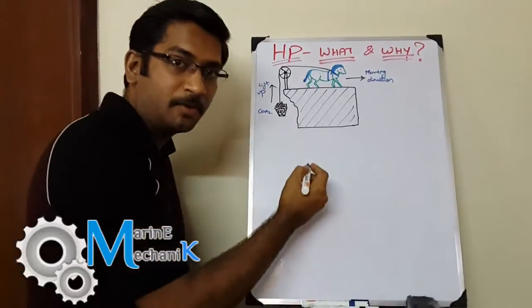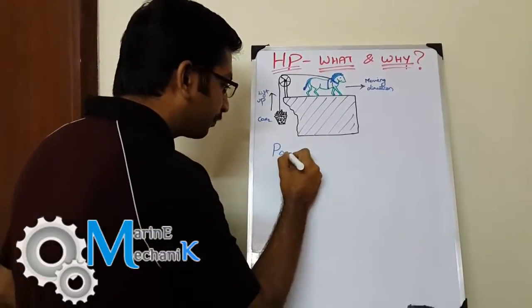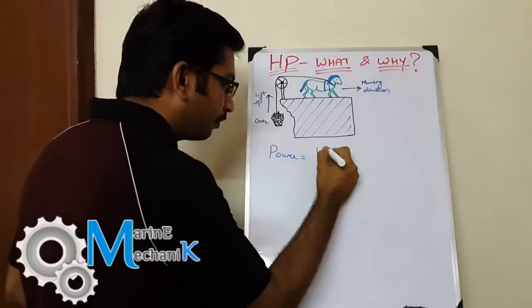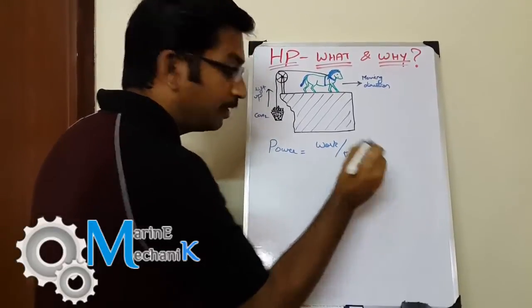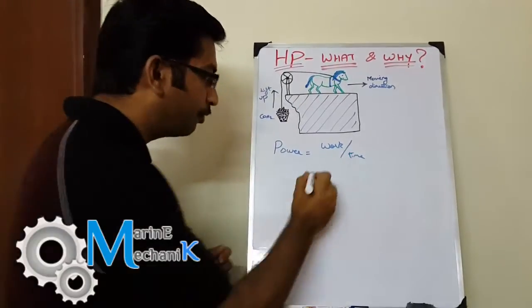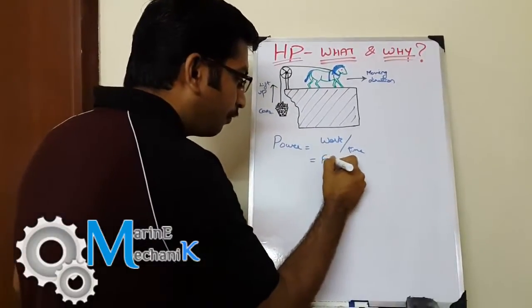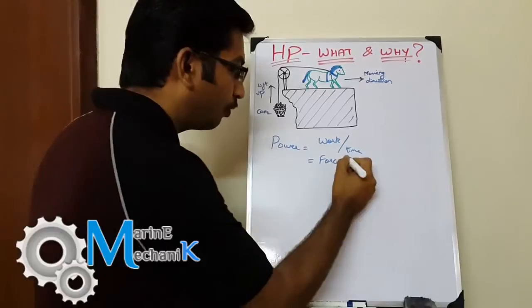They were measuring with a simple formula. Power equals work done per unit time. And we all know what is work: force moved over a distance, per unit time.